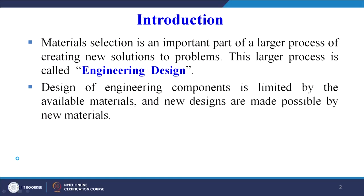We will study how to select a material in 'Selection of Materials 2', and in 'Selection of Materials 1' we will see what are the parameters governing the selection process of engineering materials for different types of products — the various guidelines we will try to understand. Materials selection is an important part of a larger process of creating new solutions to problems. It is an important part of our problem-solving approach.